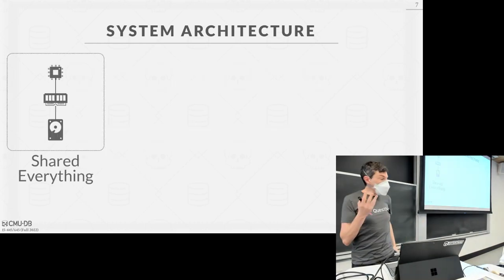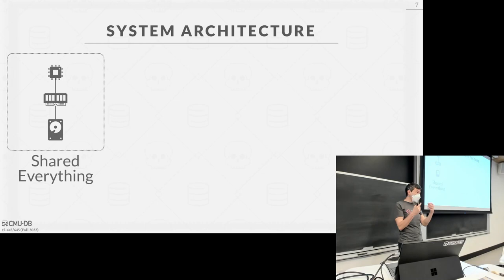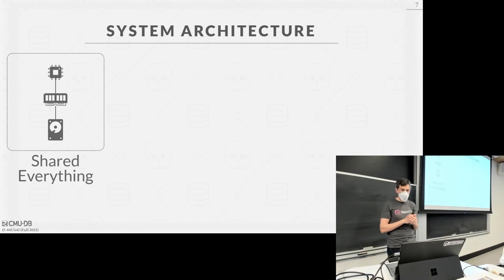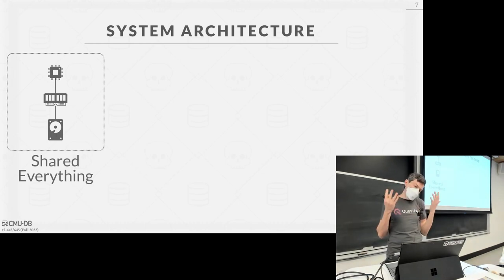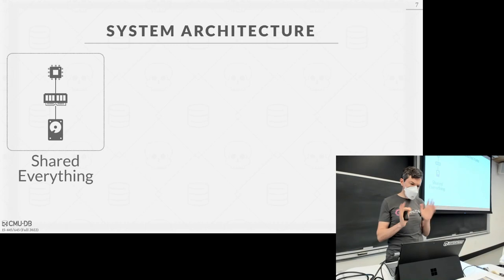There are basically four types of database systems. We can ignore embedded databases — those are like a library you link in, like SQLite, running in the same address space as your application. You could argue those are basically shared everything. We don't care about those.